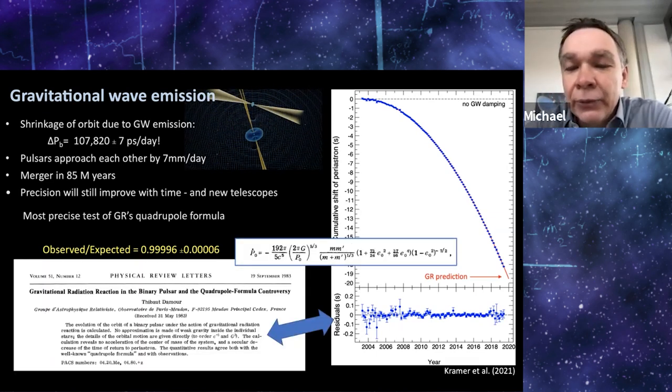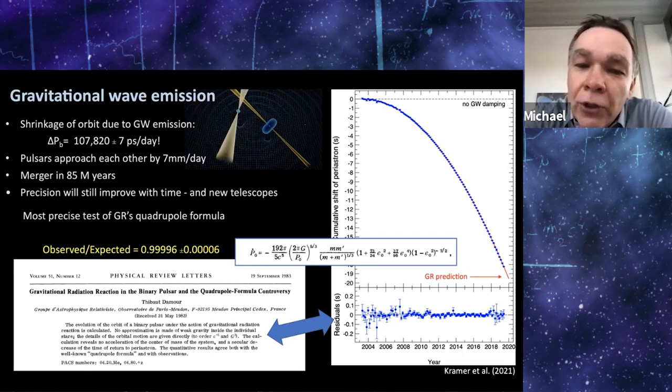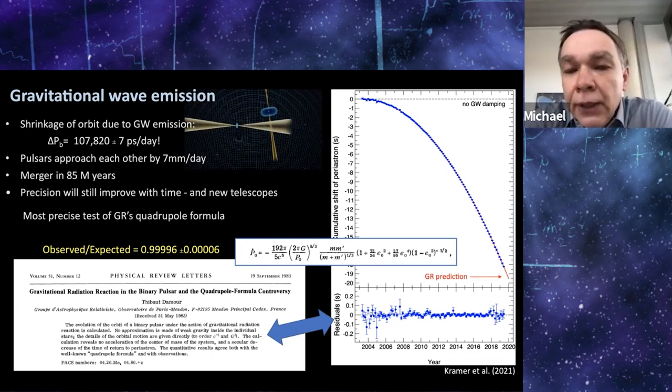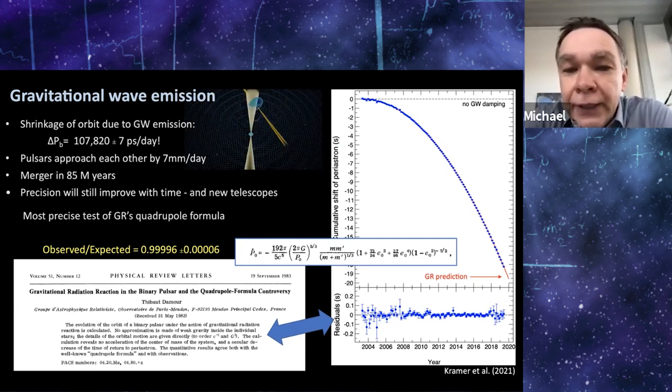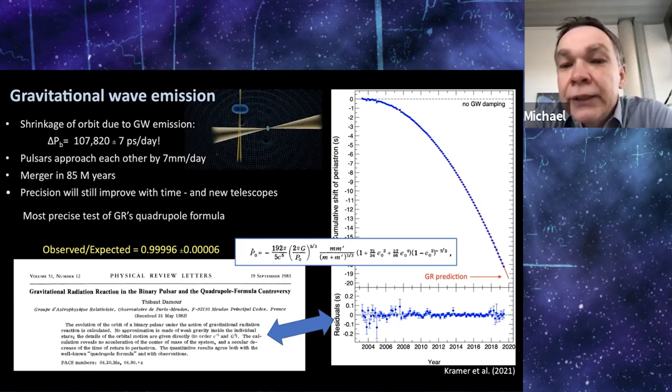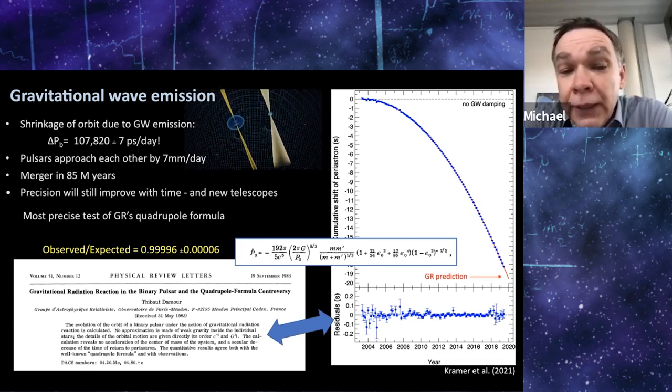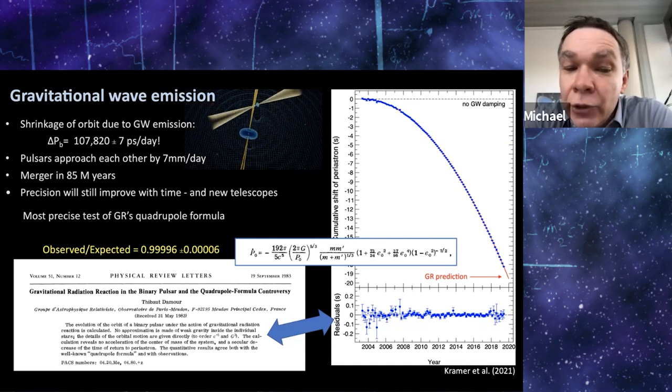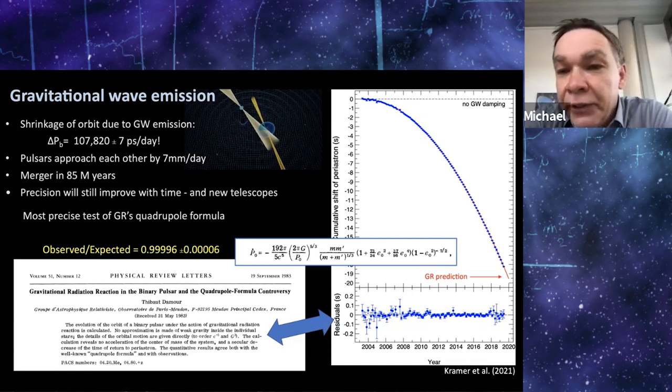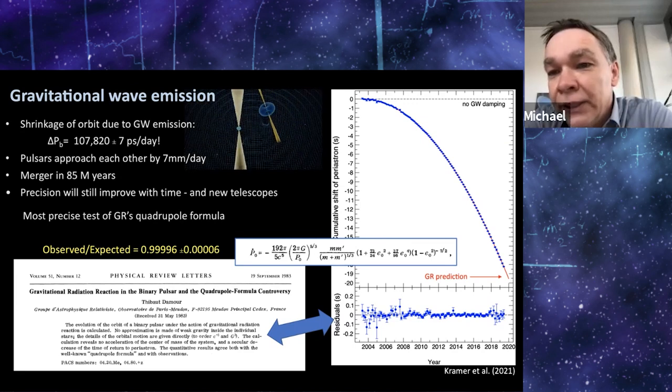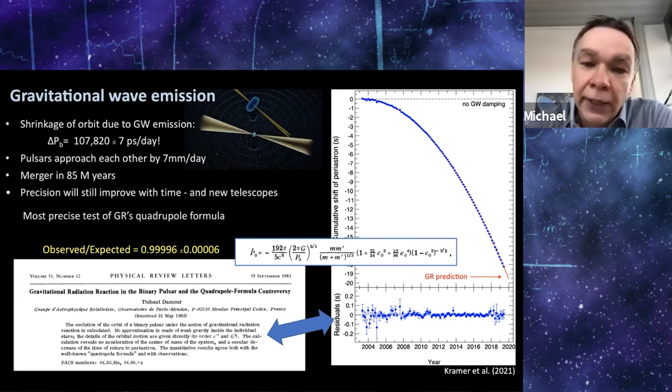This parabola, I think, is also very nicely related to Thibault's work because, for instance, in his 93 paper, he showed that the quadrupole formula, here's the one from his paper, actually is also valid for strong self-gravitating bodies. And I think that's important. And this parabola nicely shows that it is indeed the case.